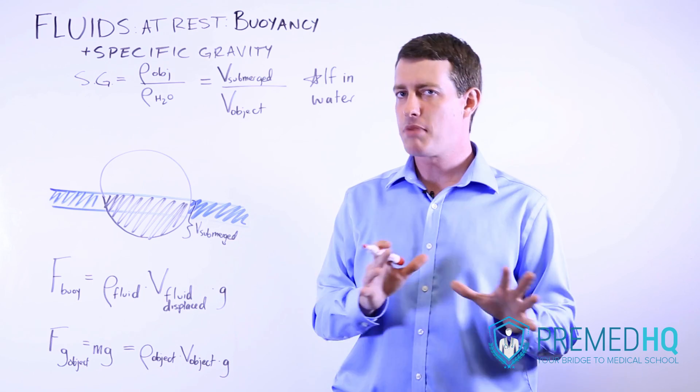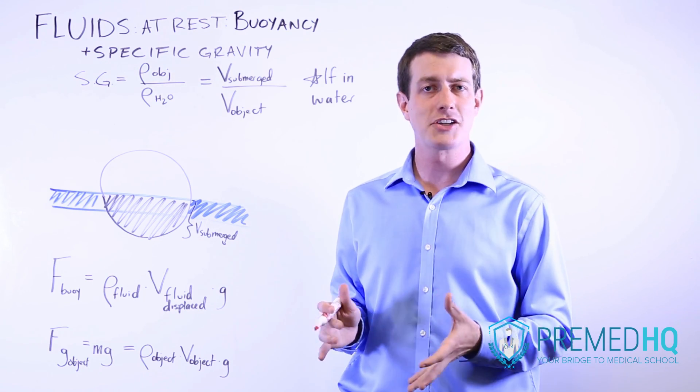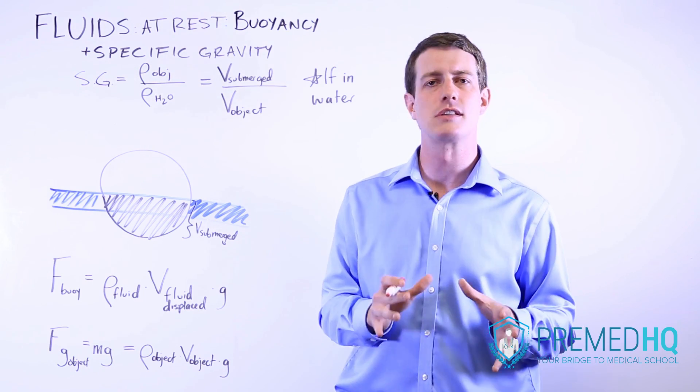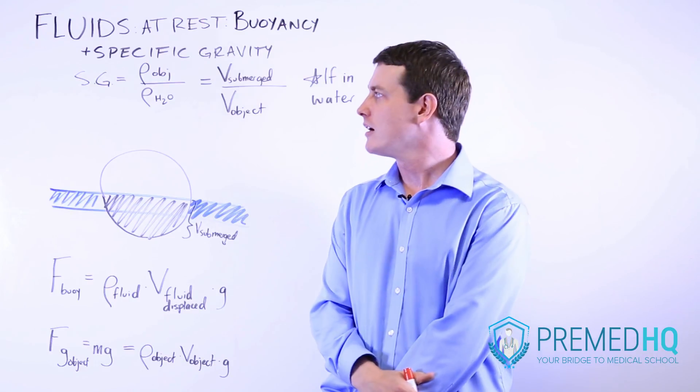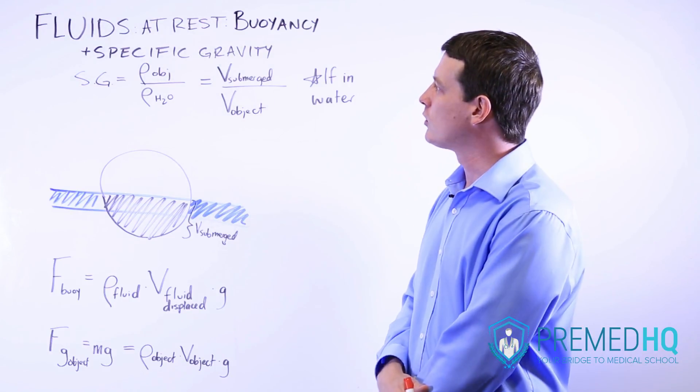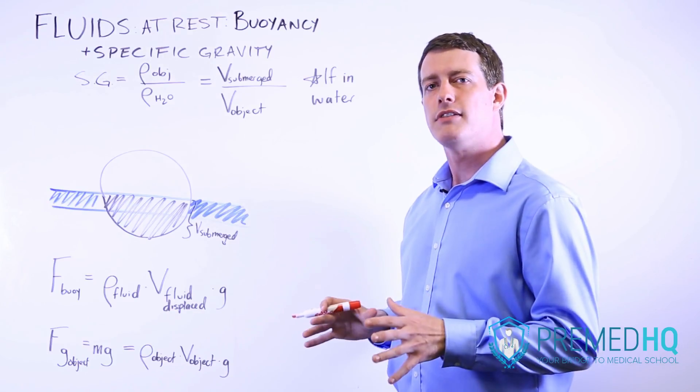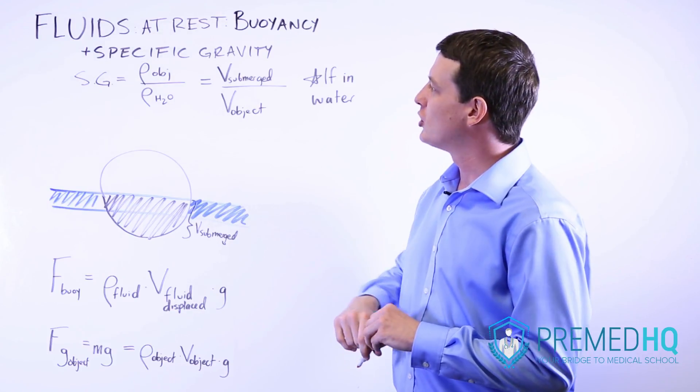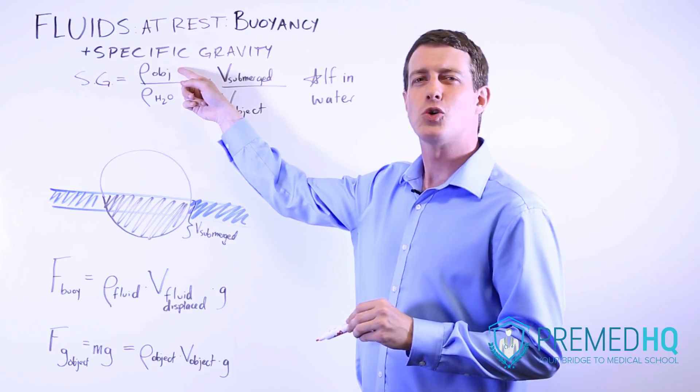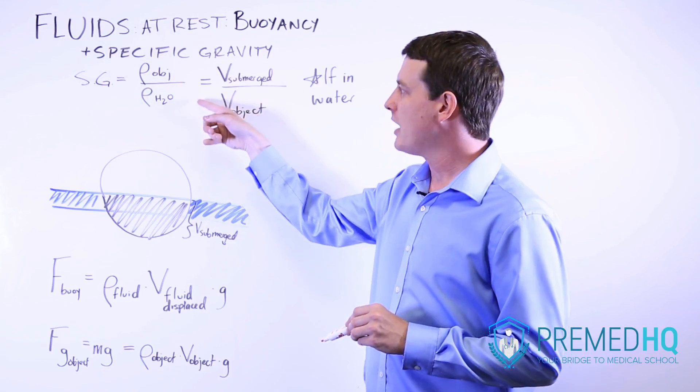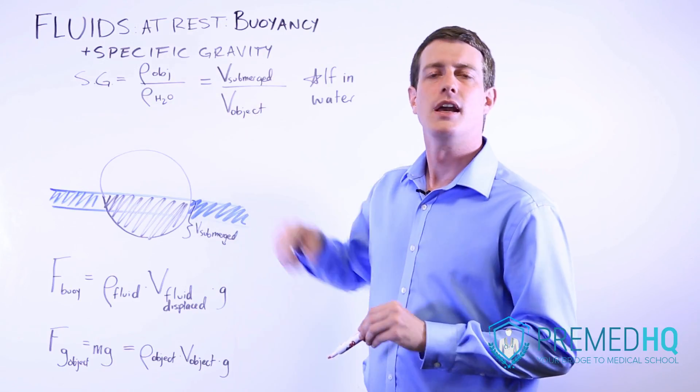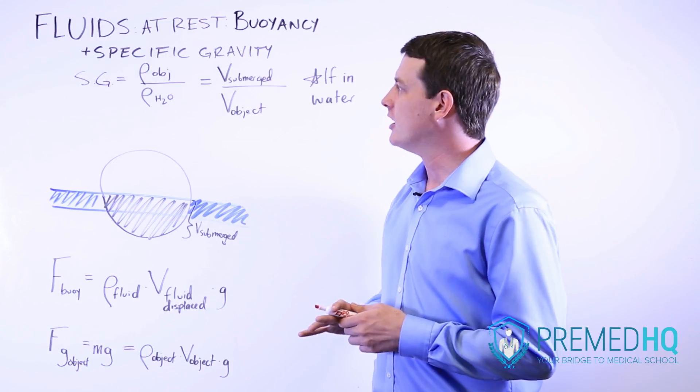Now there's a reason we revert back to water for most buoyancy discussions, and that's because buoyancy was first established when discussing water, and that is what led to a quality known as the specific gravity. The specific gravity is essentially a measure of how dense any object or material is compared to the density of water, and that's a very important factor to consider.